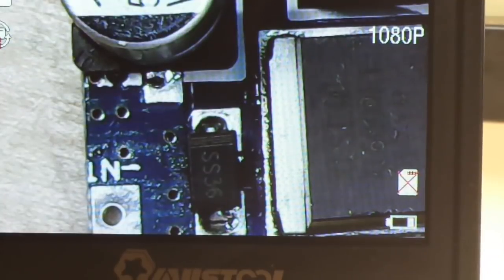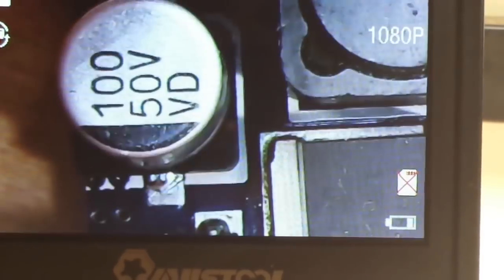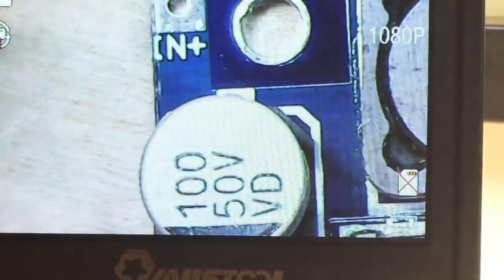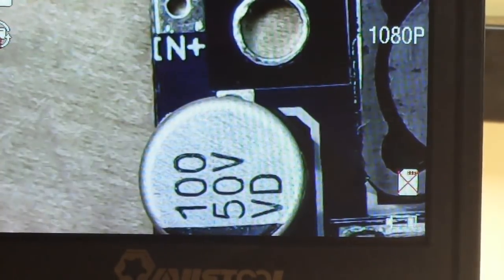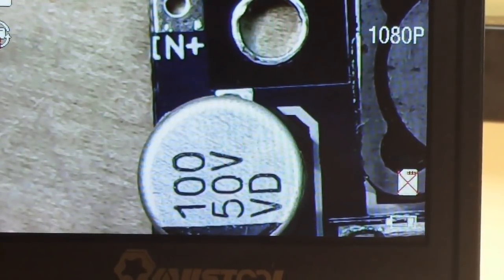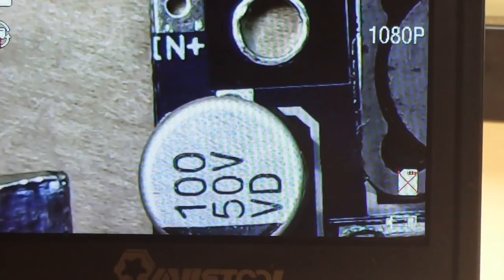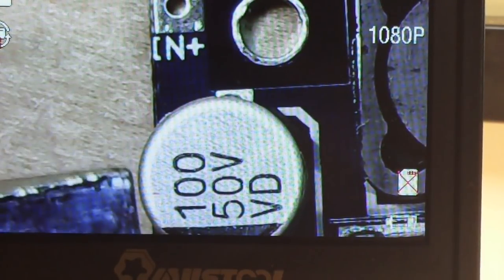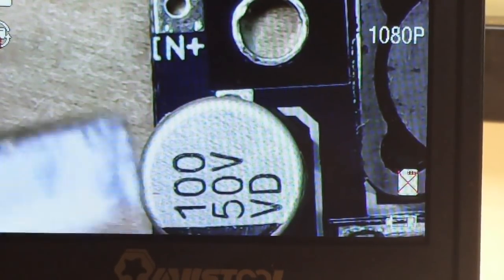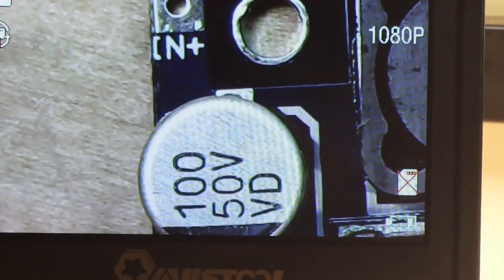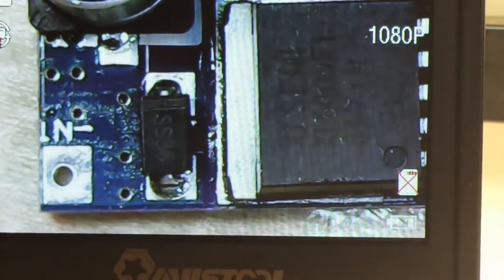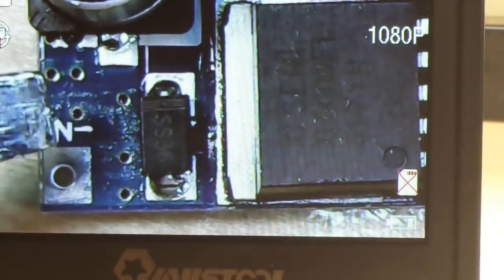Alright, so we're taking a look at this thing in the microscope here. This is our input side, you see the N plus and the N minus is down at the bottom. We have a filter cap here, good for 50 volts, and here we have this diode.